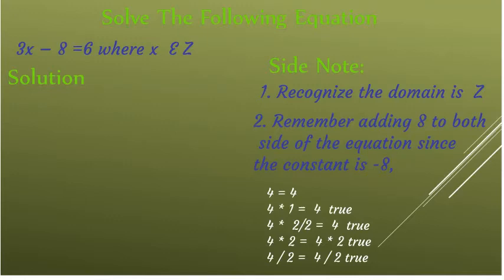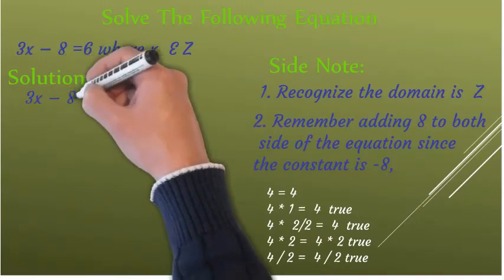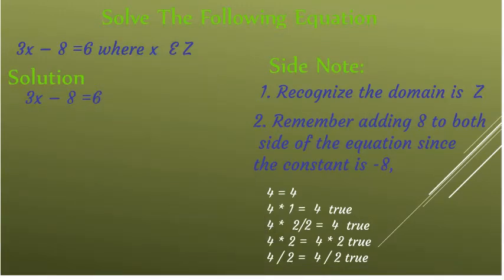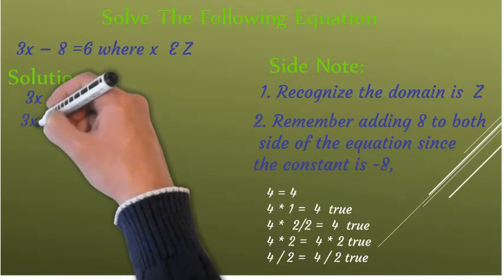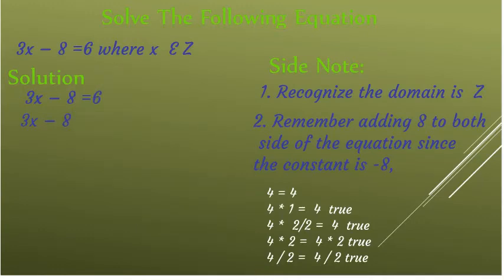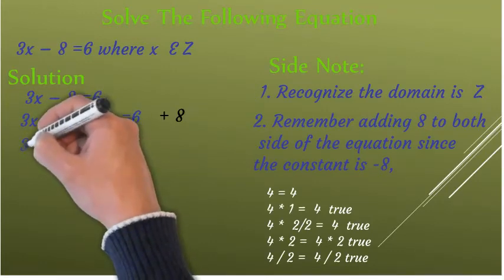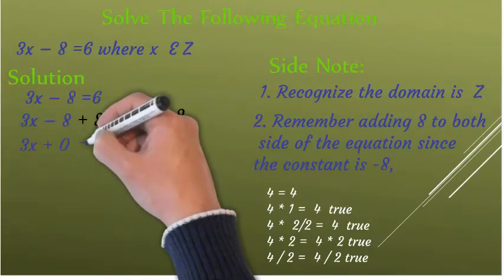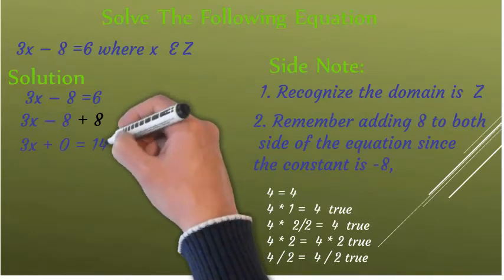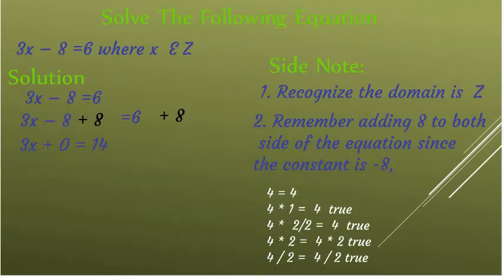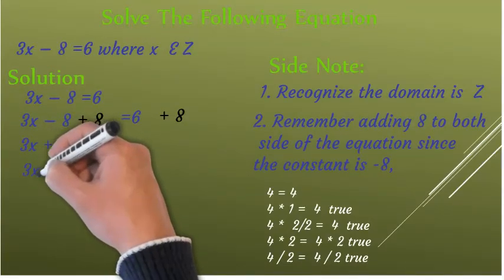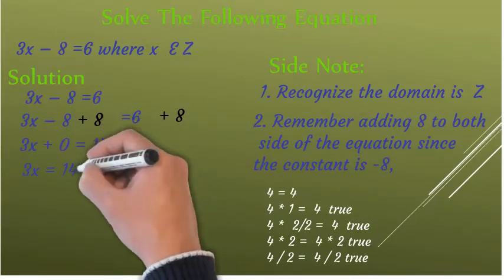With that, let's go back to solving our equation: 3x minus 8 is equal to 6. We add 8 to both sides: 3x minus 8 plus 8 is equal to 6 plus 8. We added the same number to both sides. Minus 8 plus 8 is 0, and 6 plus 8 is 14. Now we have 3x plus 0 is equal to 14, which simplifies to 3x is equal to 14.